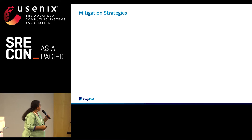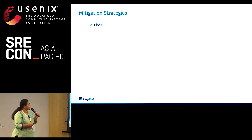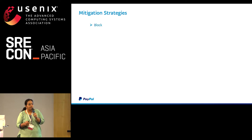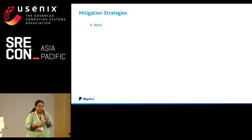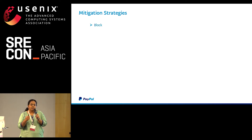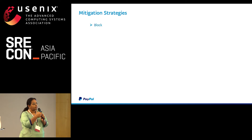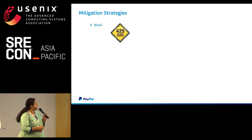Thanks Vijay. Let's talk about some mitigation strategies. The first one is block. Based on the detection strategies mentioned, if you see the traffic is absolutely bad — 100% bad — you can go for the block option. If it is web traffic, you can display an error page. If it is API traffic, you can respond with HTTP status code 429, which is Too Many Requests.